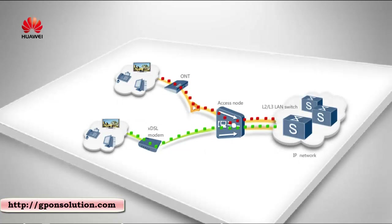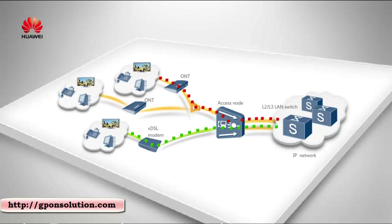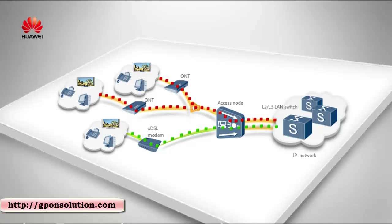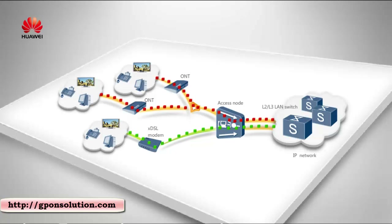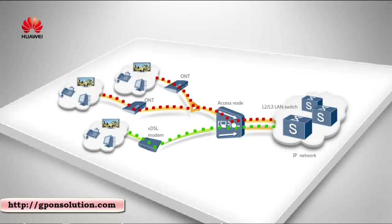In the upstream direction, the user service traffic is forwarded to the upper layer IP network through upstream ports on the access devices. As the Internet and streaming media services become more and more popular, the number of broadband users and the required bandwidths increase greatly. In this case, network congestion occurs occasionally due to bandwidth insufficiency on uplinks of the access devices, which affects user experience.